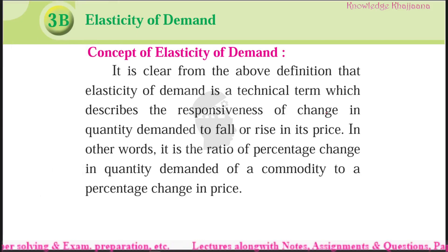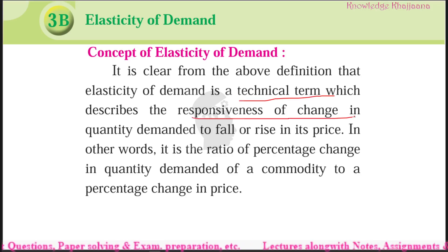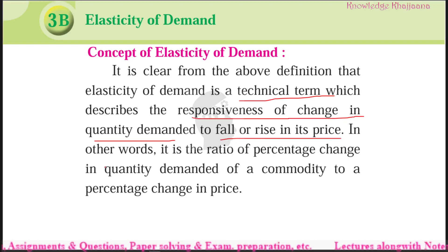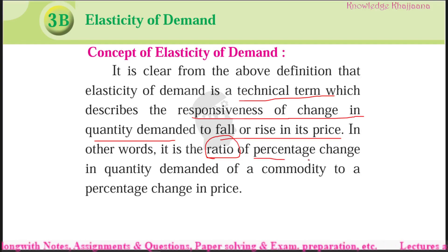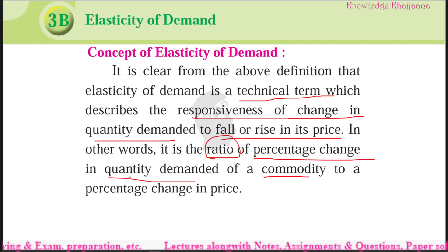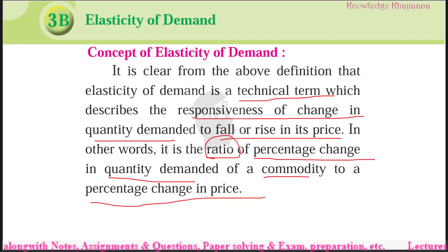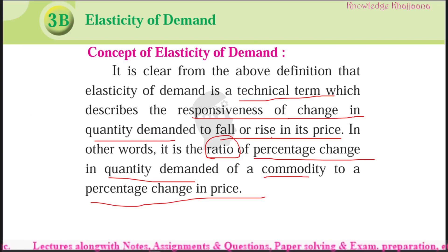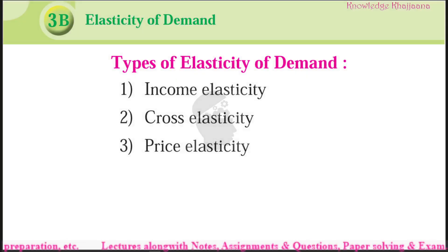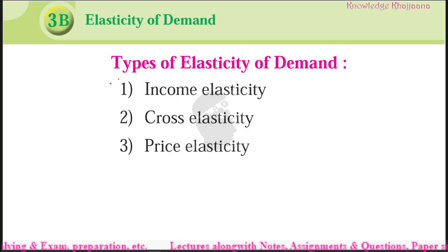What is this ratio? Percentage change in quantity demanded with reference to percentage change in price — that is the formula for elasticity of demand. There are three types: price elasticity, income elasticity, and cross elasticity. Out of these, we have already completed income elasticity and cross elasticity in our earlier lecture. Now we are going to learn price elasticity.